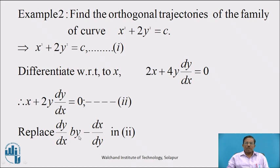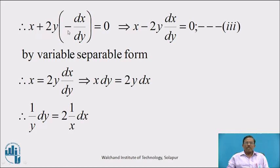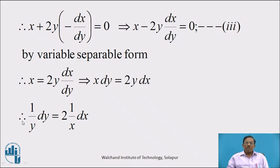Replace dy/dx by −dx/dy in equation 2: x + 2y · (−dx/dy) = 0, which implies x − 2y · dx/dy = 0, denoted as equation 3. This is the differential equation of the orthogonal trajectory. Solving equation 3 by variable separable method: x = 2y · dx/dy, which implies x dy = 2y dx. Separating variables: (1/y) dy = 2 · (1/x) dx. This is the variable separable form.